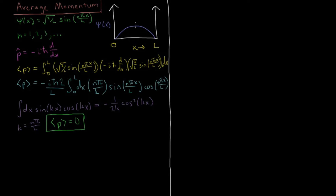This makes sense because at any given point in time we have a large probability density in the middle of the box, and at higher solutions there are more and more peaks. Since the average position isn't changing over time, it makes sense that the average momentum is zero — if your position isn't changing, you have no average velocity and therefore no average momentum.